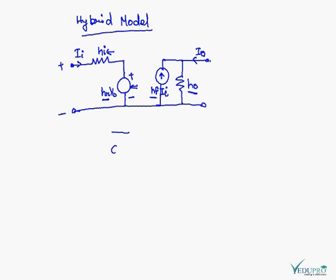For example, in case of common emitter, E will be the suffix here. HIE, HRE, HFE and HOE. And the rest of the things will be the same.